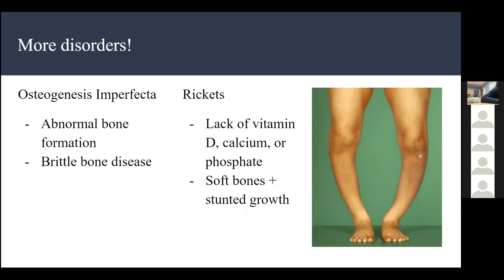Osteogenesis imperfecta is abnormal bone formation, also known as brittle bone disease, because bones aren't formed properly and break very easily. This is different from osteoporosis — the cause is different; this is specifically abnormal bone formation.